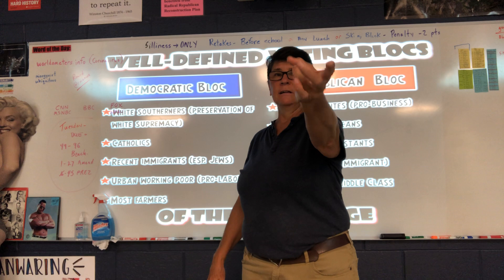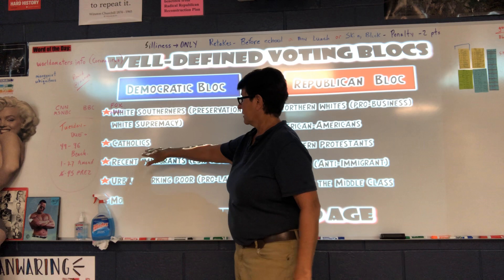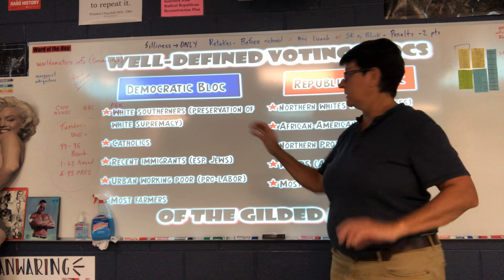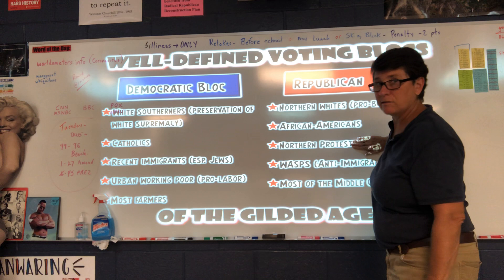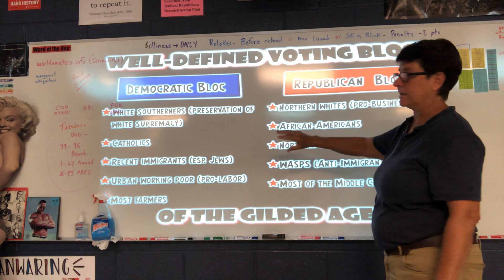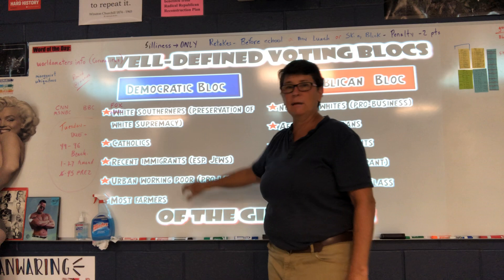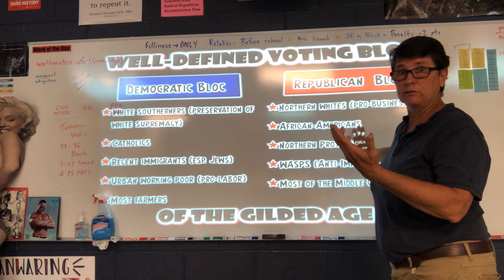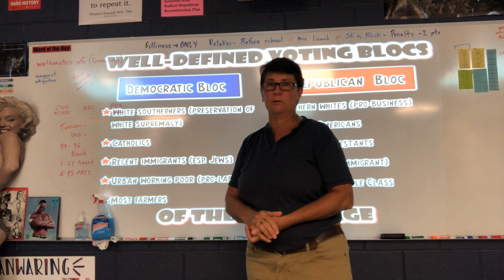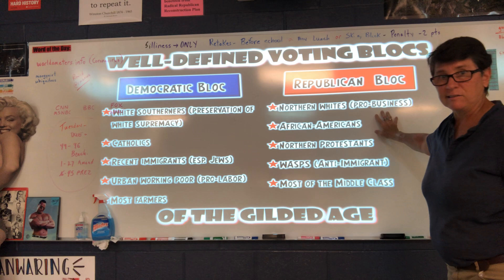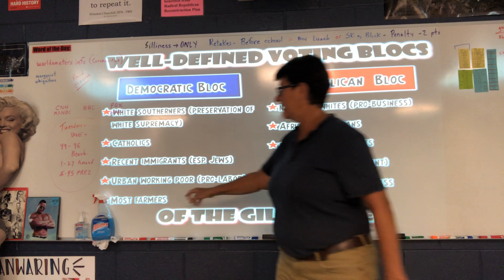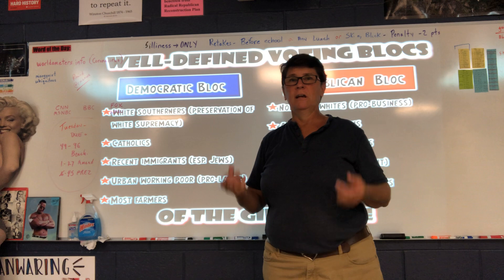Those three Democratic presidents were Cleveland, Woodrow Wilson during World War I, and FDR during World War II. So mostly it was white Southerners. Catholics were also Democrats because most of the northern establishment were Protestants — Protestant literally means protesting against the Catholic Church, so they were very anti-Catholic, and clearly they would not be in the same party. Recent immigrants — especially Jews — were Democrats, because the right was very Christian. Urban working poor were pro-labor, so Democrats cared about laborers. Of course, the Republican bloc was pro-business. Mostly farmers were Democrat, because it was the agricultural Deep South.